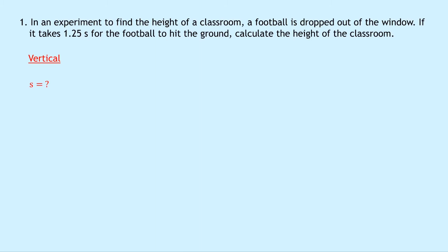So we don't know what s is, the displacement, because that is the height of the classroom that we're trying to find. We know the initial velocity is going to be 0 meters per second because it's dropped from rest. We don't know what the final velocity is. We know the acceleration is going to be minus 9.8 meters per second squared if we define upwards to be positive and downwards to be negative in this example.